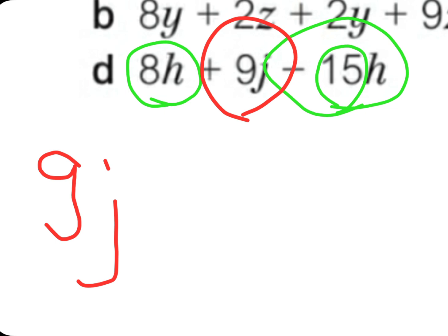The negative sign is with the bigger number, so negative 15h plus 8h equals negative 7h. We put the variable next to it: because the negative sign is with the bigger number, 15 minus 8 is 7 and we take the sign of the bigger number, giving us negative 7h. So the answer is 9j minus 7h.